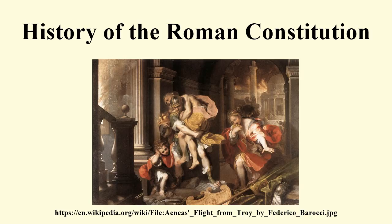Octavian's reforms did not, at the time, seem drastic, since they did nothing more than reorganize the constitution. The reorganization was revolutionary, however, because the ultimate result was that Octavian ended up with control over the entire constitution, which itself set the stage for outright monarchy.